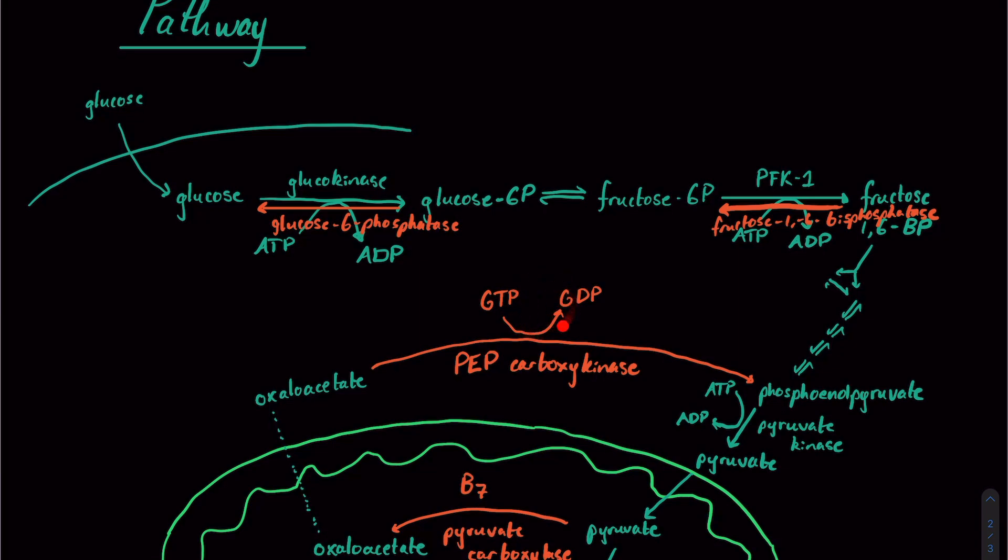and that will be converted to GDP to contribute to the phosphate group on phosphoenolpyruvate. So that's another potential question they could ask you. But really knowing well this entire pathway, and simply knowing glycolysis really well, is going to help you know gluconeogenesis very well.